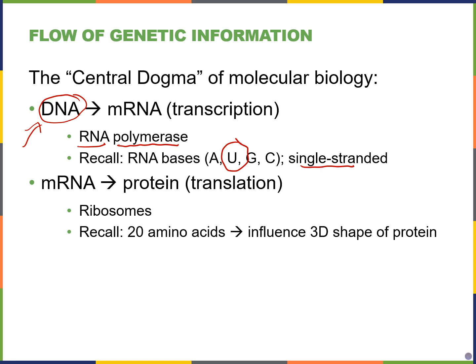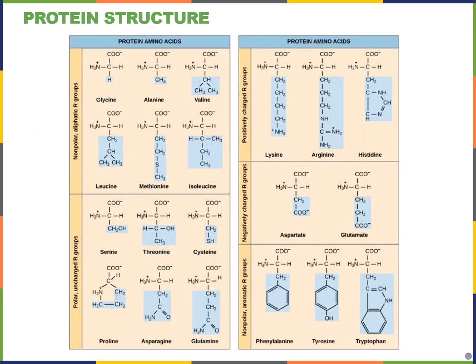Once we have our messenger RNA, it's going to be translated into proteins, primarily through the function of ribosomes. Remember that there are about 20 amino acids in nature, and depending on the type of amino acids in your protein, that will affect the three-dimensional shape and function of that protein. We saw this chart way back for exam one material — these are some of the amino acids that we have in nature.